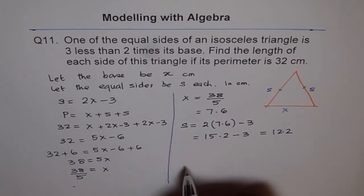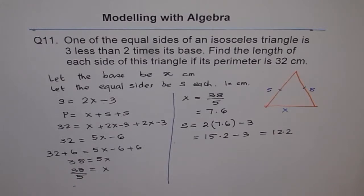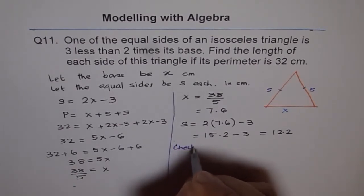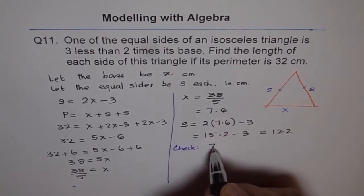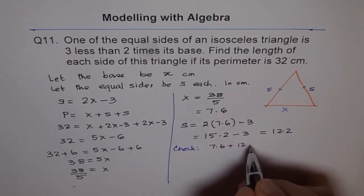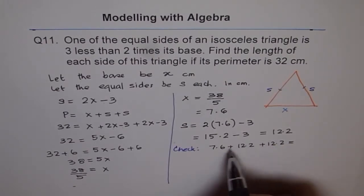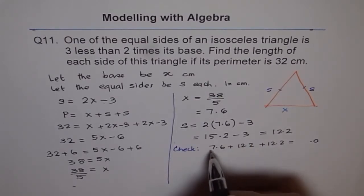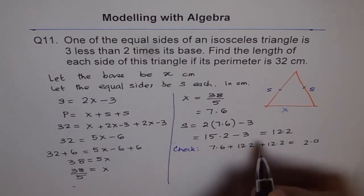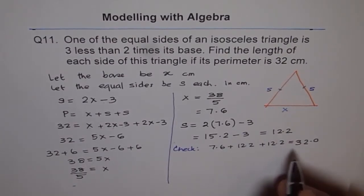Before writing answer, we can check. Let's check our perimeter. Is it really 32 centimeters? It's important to check your answer also. Sum of the sides: 7.6 plus 12.2 plus 12.2. 2 plus 2 is 4, 4 plus 6 is 10, 1, 2, 3, 32.0. Perfect. So that is perfect.